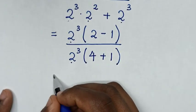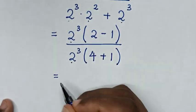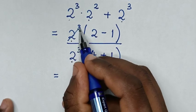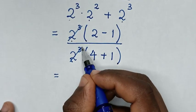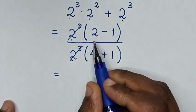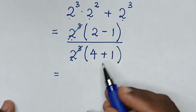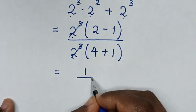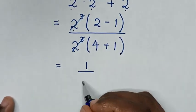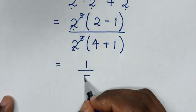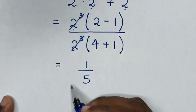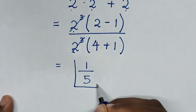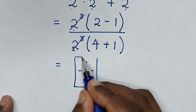In the next step, to simplify, 2 power of 3 will cancel with 2 power of 3. Then it will be 2 minus 1, which is 1, over 4 plus 1, which is 5. Therefore, 1 over 5 is the final answer to our problem.